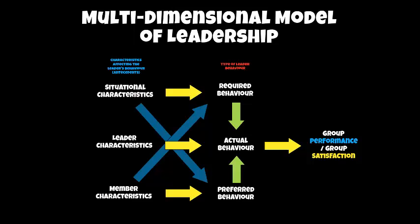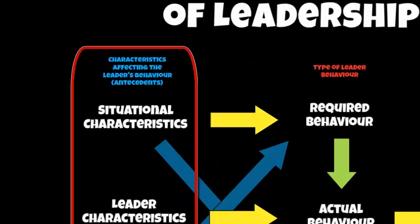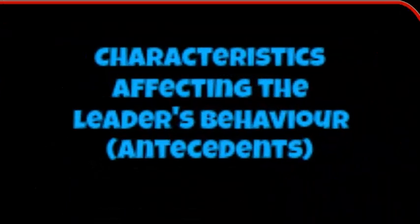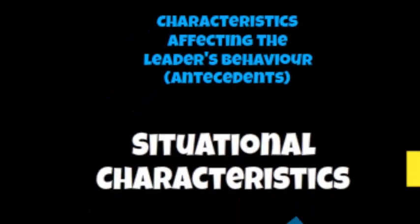If we start at the top left, all three down the left-hand side are what we call characteristics affecting the leader's behaviour, or antecedents. If we look at the top left, it says situational characteristics. Situational characteristics are environmental conditions — what is happening in this situation? What is the situation you're in?